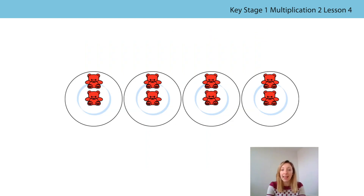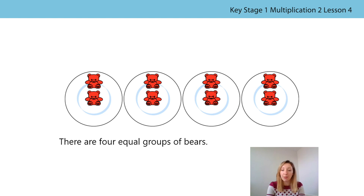Here are some bears. The bears have been grouped. How many equal groups are there? Will you count with me? One group, two groups, three groups, four groups. So there are four equal groups of bears. How did we know that they are in equal groups? That's right, fantastic. There's the same number of bears in each group, aren't there? Do we need to count them all? We don't — we can see just by looking that it's the same number of bears in each group.